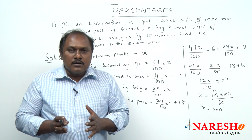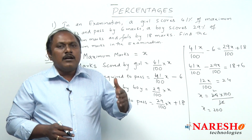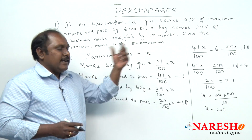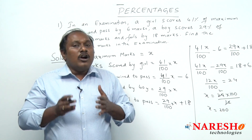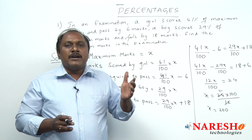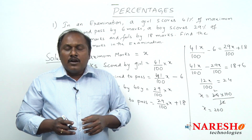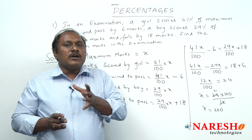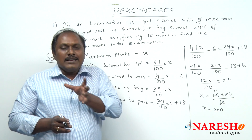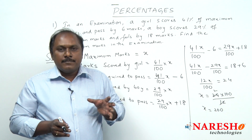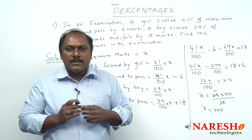This is one method to solve this particular problem, which is a general method by using a variable x. Now let us see an alternate method to solve this particular problem in a very simple way. In that method, we try to compare the percentages of boy and girl and the marks of boy and girl.